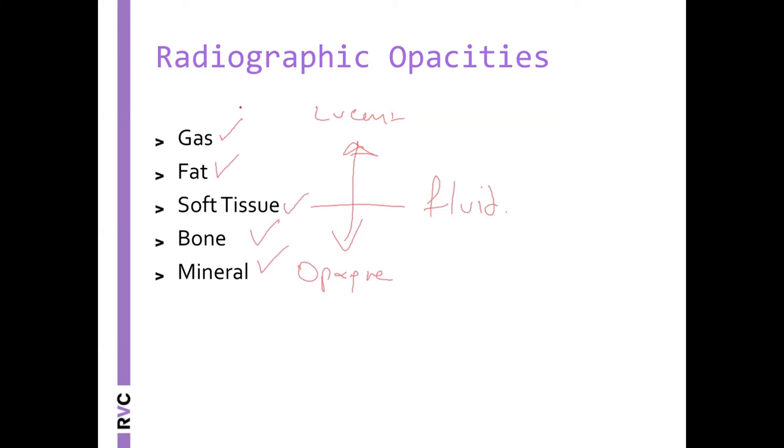Bone and mineral. So again, from lucent to opaque, we have gas, fat, soft tissue, bone, and mineral. And we can see all those opacities in every radiograph we have, especially of the thorax and abdomen. Easy. And you will say, what about the mineral? Usually it's the unexposed part or the marker—the left or right marker we have on that could be mineral. So it would be a good exercise for you: take a thoracic radiograph and try to identify each of those opacities. Gas, fat, soft tissue, bone, and mineral. So be specific.